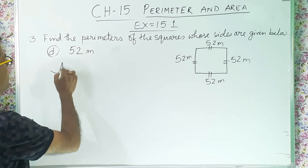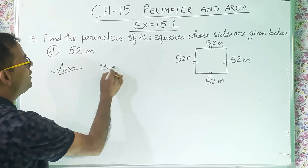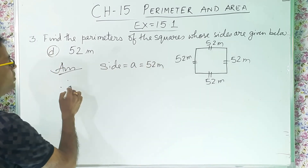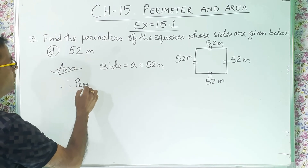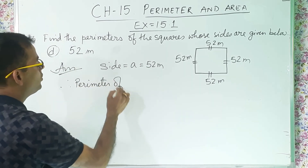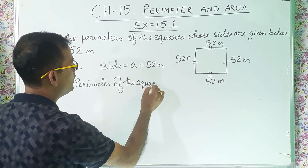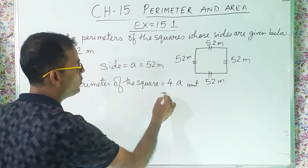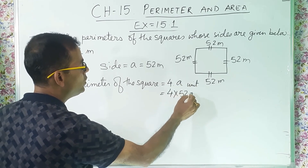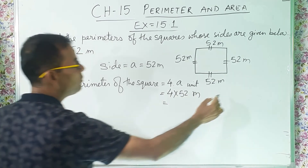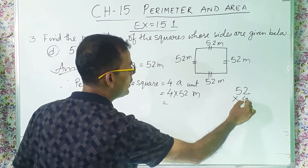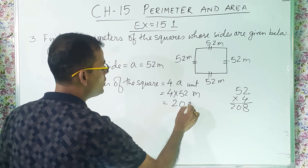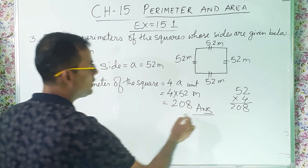I will do the solution: side A equals 52 meter. Therefore, perimeter of the square equals 4 into A, which is 4A: 4 into 52 meter. Multiply: 4 twos are 8, 4 fives are 20 — so 208 meter. Answer.